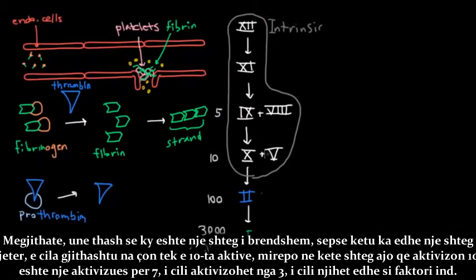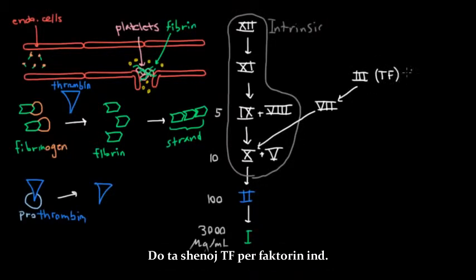But anyway, I said that this was the intrinsic pathway because there is another pathway which also leads to an activated 10, but in this other pathway, what activates the 10 is an activated 7, which is activated by 3, also known as tissue factor. And I'll just write TF for tissue factor.